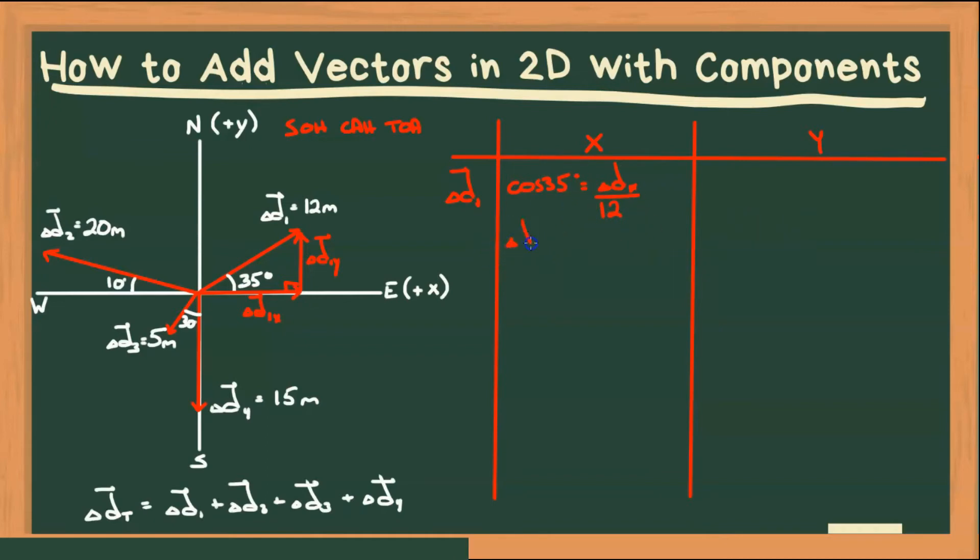Multiplying both sides by 12, I'll get delta D1X is equal to 12 cos 35. And it has a direction. You can see it's pointing towards the east. And if we put this onto our calculator, we will get it to have a value of 9.8 meters east.